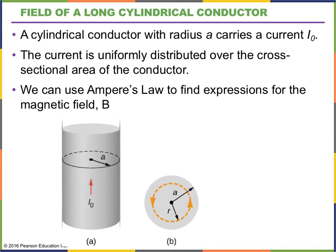We're going to show some examples where Ampere's law is a much easier way to calculate the magnetic field due to a particular arrangement of current. Our first example: instead of a long thin wire, we're going to have a cylinder of current, where the total current is spread throughout the cross-sectional area. The total current is i₀, but instead of one thin line, it's distributed throughout a cylinder.